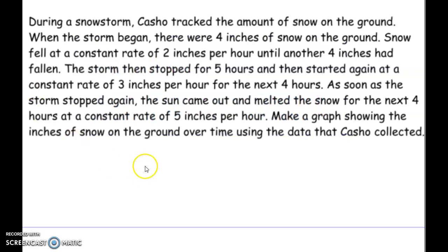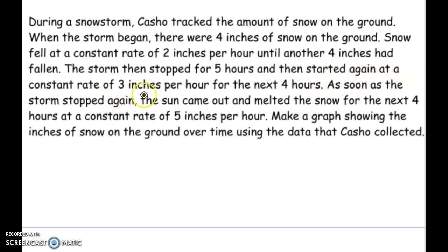Alright, here's our first example. During a snowstorm, they tracked the amount of snow on the ground. When the storm began, there was four inches of snow on the ground. Snow fell at a constant rate of two inches per hour until another four inches had fallen. The storm did stop for five hours and then started again at a constant rate of three inches per hour for the next four hours.